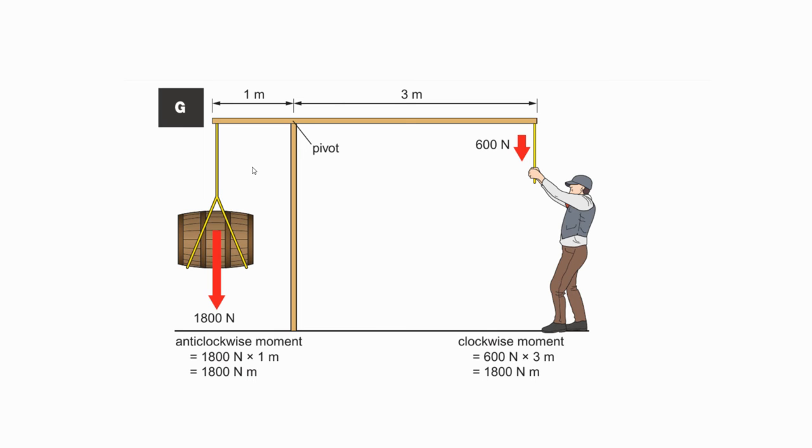The person on the right exerts a downward force. This force, times by the distance of 3 metres, produces a clockwise moment.